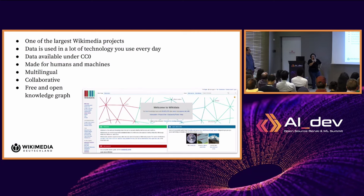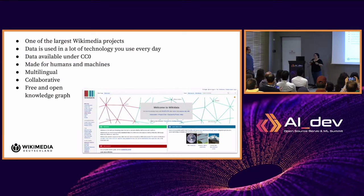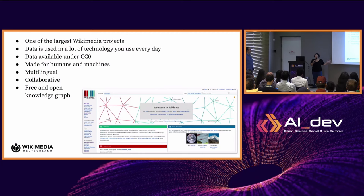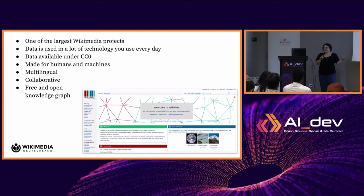For those of you who don't know Wikidata yet, it's one of the Wikimedia projects — a sister project of Wikipedia that is all about data. The data from Wikidata is used in a lot of technology that you use every day without maybe even realizing it's coming from Wikidata, like your digital personal assistant on your phone.